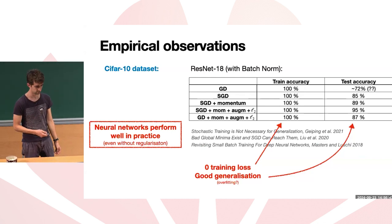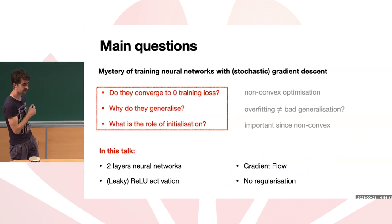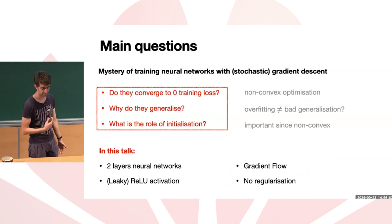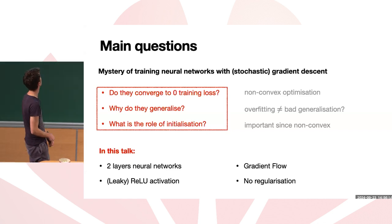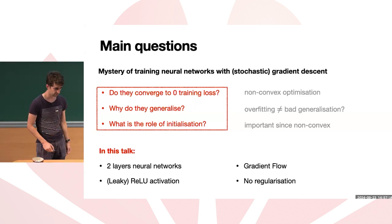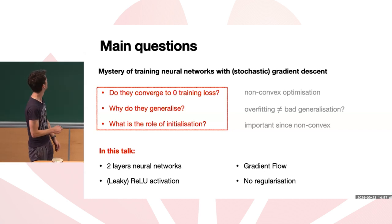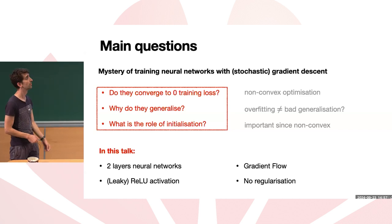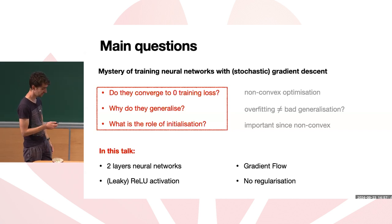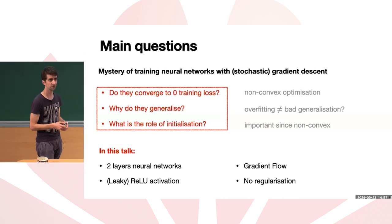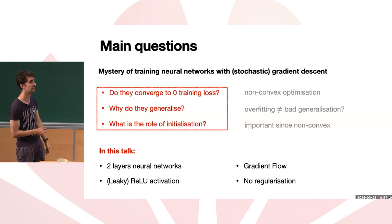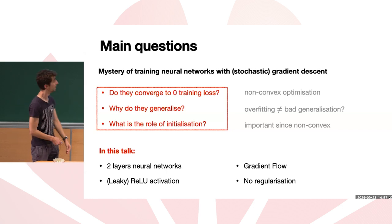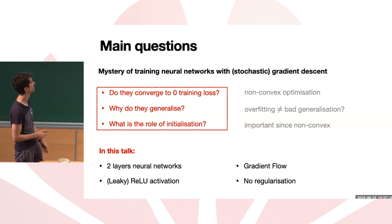Inspired by this observation, I focus on three key questions central to understanding neural network training theoretically: Do we actually converge to zero training loss when training overparameterized models? Why do they generalize so well? Both questions are connected to a third: the role of initialization. Neural networks have non-convex optimization losses, and because of this non-convexity, initialization plays a very important role in what happens during training.